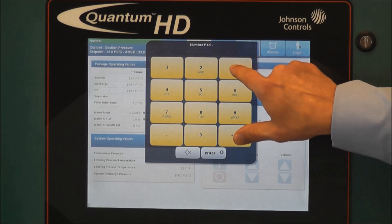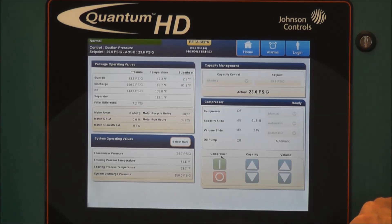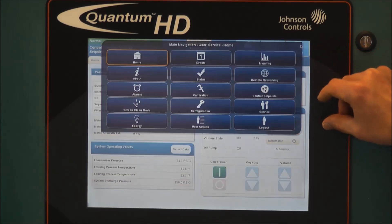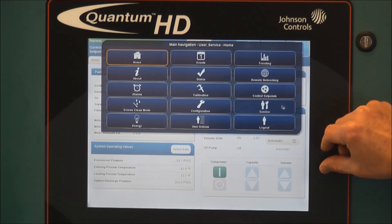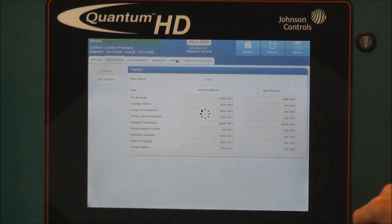And we'll enter in our personal identification number and press enter. And login changes to menu. Once again, press menu, then the service icon, and from the file tabs, select software.